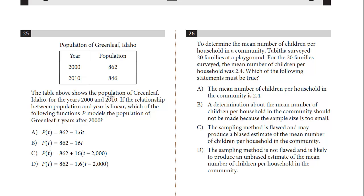Let's take a look at the first question, number 25. The table shows the population of Greenleaf, Idaho for the years 2000 and 2010. If the relationship between population and year is linear, which of the following functions models the population of Greenleaf T years after 2000? So they're telling us it's a linear population. In this case, if we look at the relationship in 2000, we have 862, in 2010 it's 846.